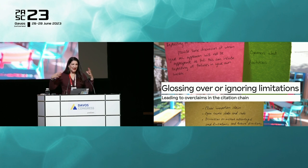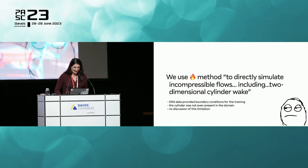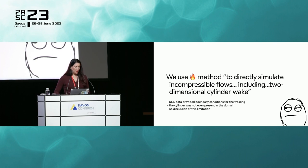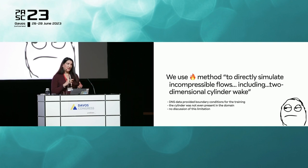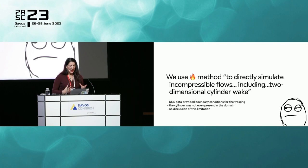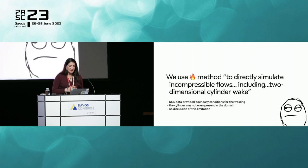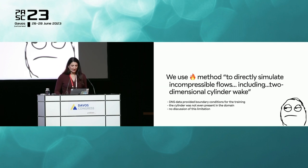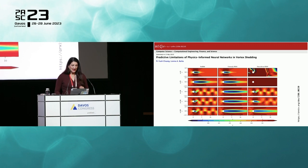Here's a typical example. A paper says: 'We used our method to directly simulate incompressible flows, including two-dimensional cylinder wake.' But if you look carefully, they provided DNS data as boundary conditions for training — so it's a data-driven scenario. In fact, the circular cylinder was not even in the domain of computation. There's no discussion of this limitation in the paper at all. We have experimented with these physics-informed neural networks and found them unable to capture vortex shedding behind a circular cylinder in a data-free setting.